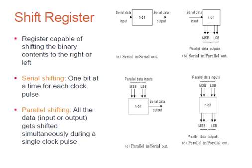Based on this, we can classify four types of shift registers. The first is Serial In Serial Out (SISO), where serial data is input into the device one bit at a time for a single clock pulse, and the output is also taken out one bit at a time. The second type is Serial In Parallel Out (SIPO), where data is input one bit at a time but the output is taken all at once.